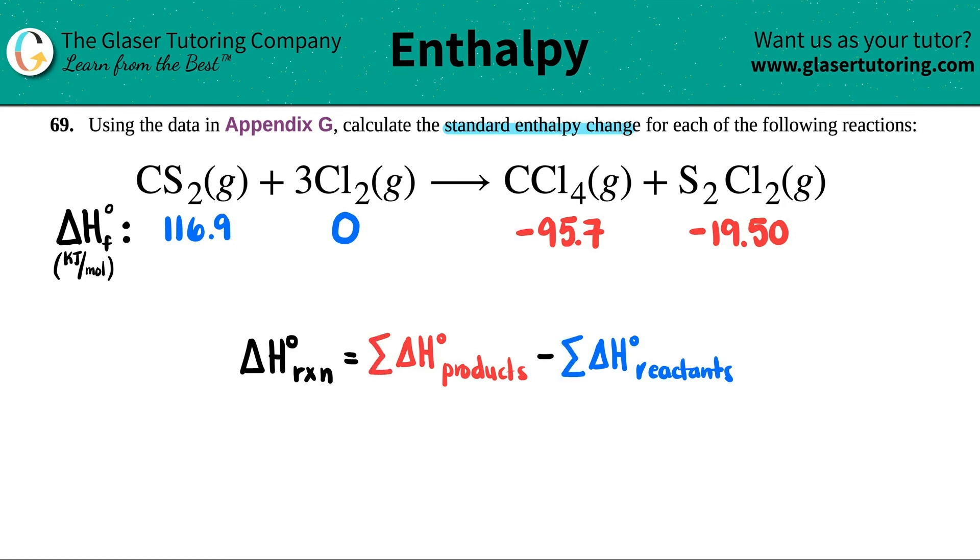So what we have to do is basically get one number for all the reactants and one number for all the products. We're going to take the number that we found on Appendix G and multiply by how many we have in our equation. I already see that they gave us coefficients here, which means it's balanced already, but you could always pause the video just to make sure. Now you're just going to multiply the number by how many you have in your balanced equation.